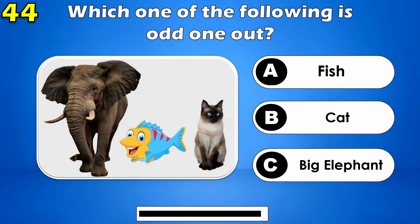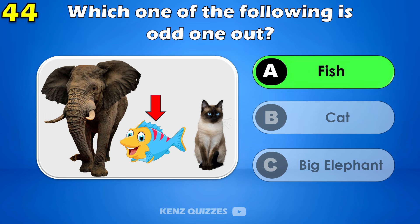Which one of the following is the odd one out? The answer is fish.